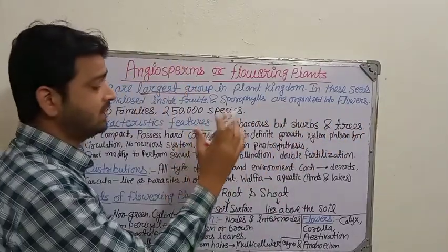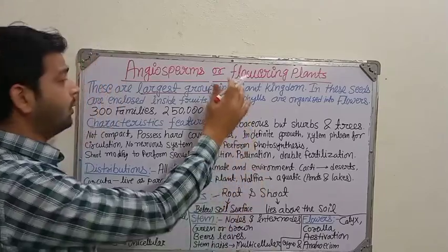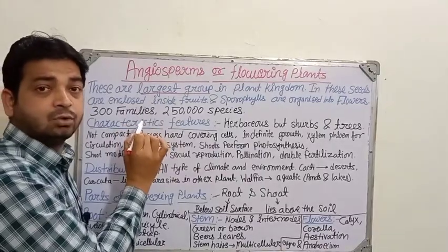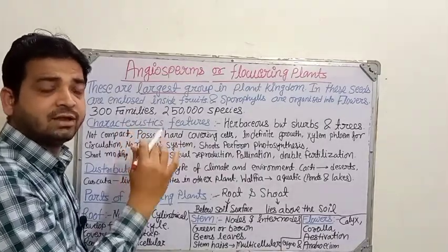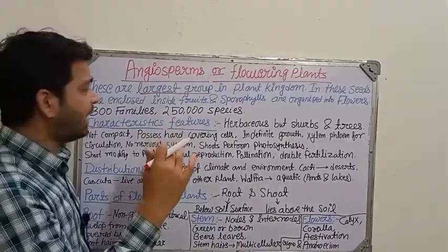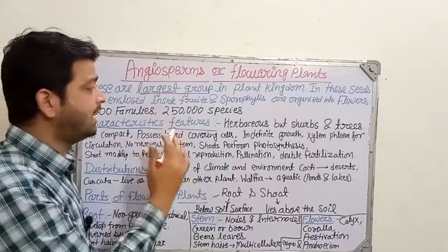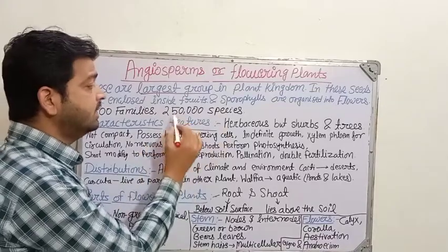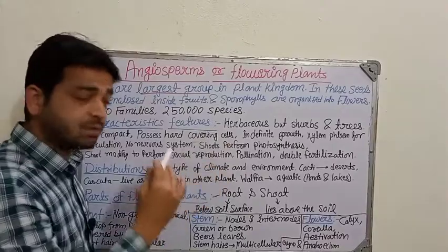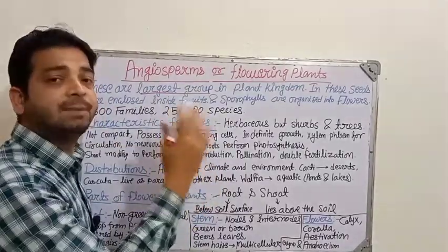In the flowers, different parts — the sporophylls — are organized, and we are going to discuss that in detail. Overall, 300 families have been identified as flowering plants. Just imagine, in one family there are lots of genera and lots of species. And 250,000 different species have been reported till now as flowering plants.